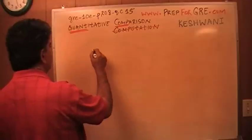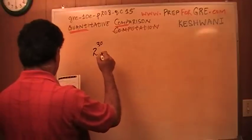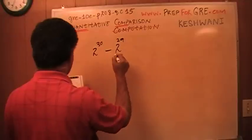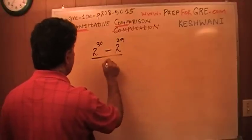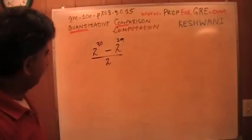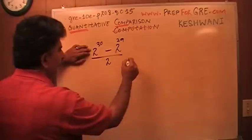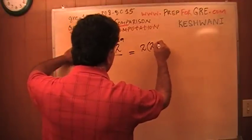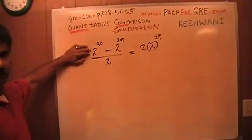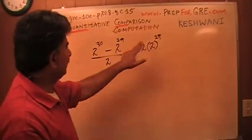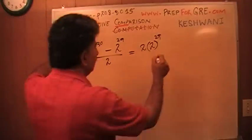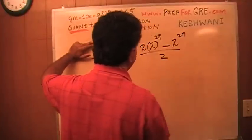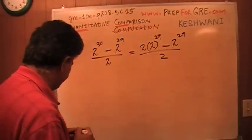2 raised to 30 minus 2 raised to 29 over 2. So let's start then. Can I write 2 raised to 30 as 2 times 2 raised to 29? Of course. Why not? 2 times 2 raised to 29 is the same as 2 raised to 30. Minus 2 raised to 29 over 2. Now I want you to look at this part here before I go any further.